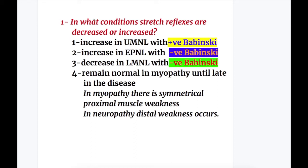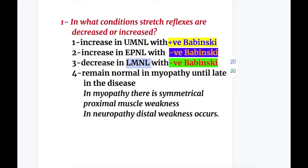Answers to the questions. In what conditions are stretch reflexes decreased or increased? Number one, they are increased in upper motor neuron lesion with positive Babinski — a pyramidal lesion, most commonly at the internal capsule. Number two, they are also increased in extrapyramidal lesion, but in that case there is negative Babinski. Number three, they are decreased in lower motor neuron lesion with negative Babinski. Number four, reflexes remain normal in myopathy until late in the disease. In myopathy there is symmetrical proximal muscle weakness, whereas in neuropathy there is distal muscle weakness.